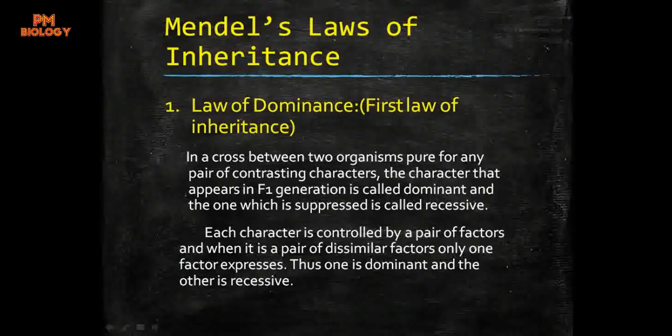Each character is controlled by a pair of factors or genes. When it is a pair of dissimilar factors, only one factor expresses. Thus one is dominant and the other is recessive. Even though they are present in pairs, only one factor will express in the F1 generation — the one expressed is dominant and the one not expressed is recessive.